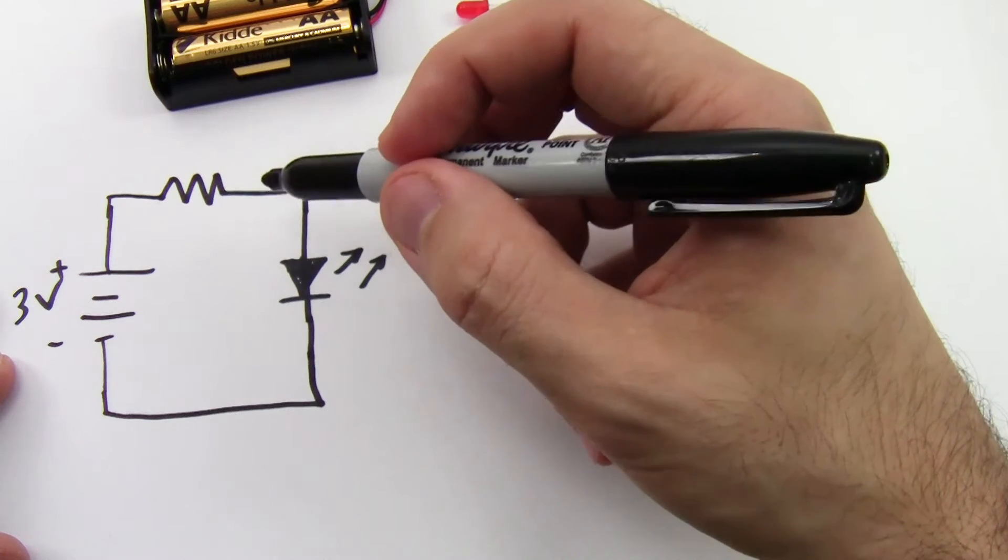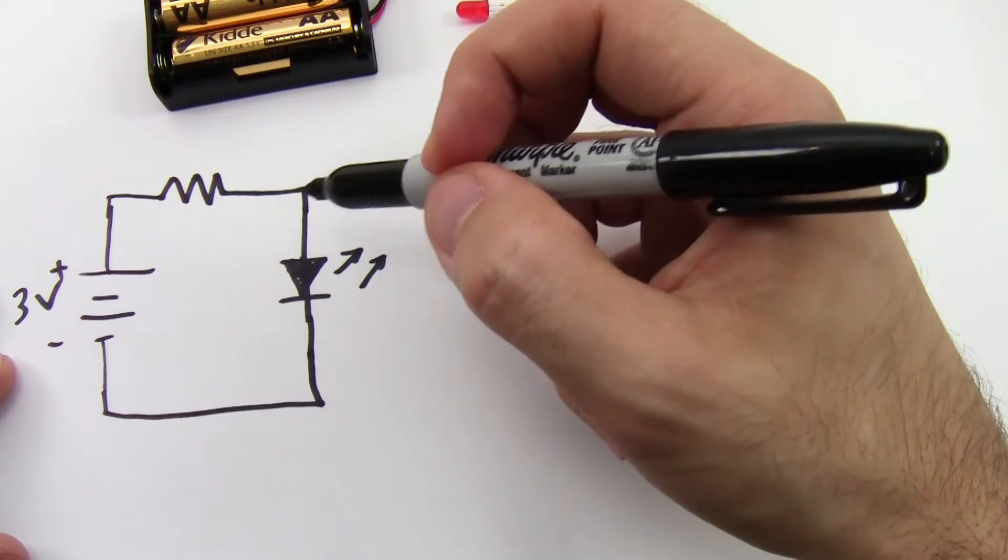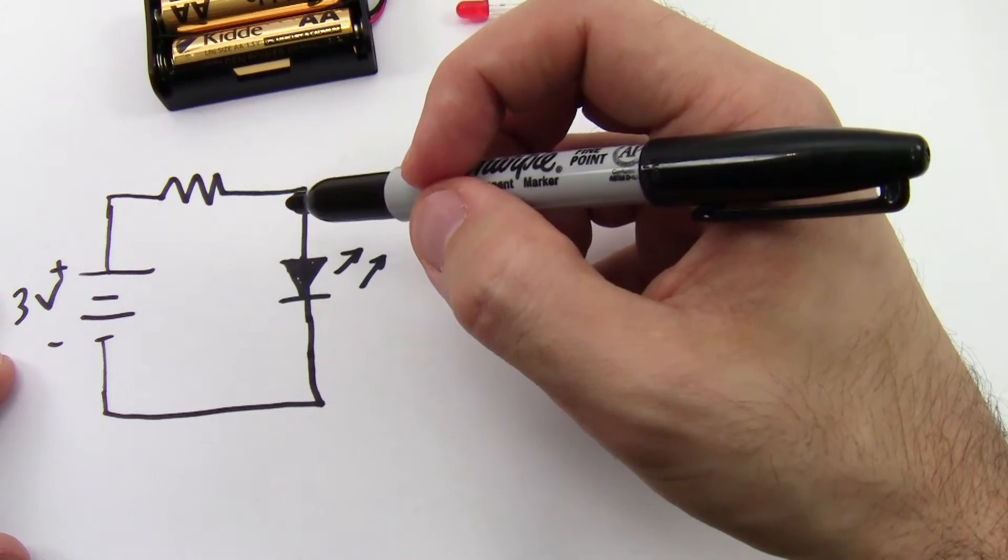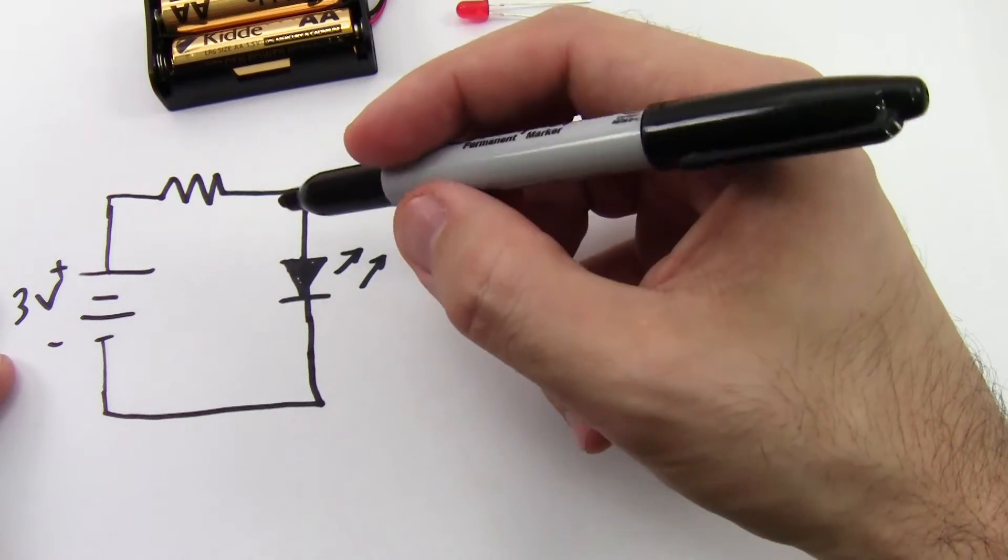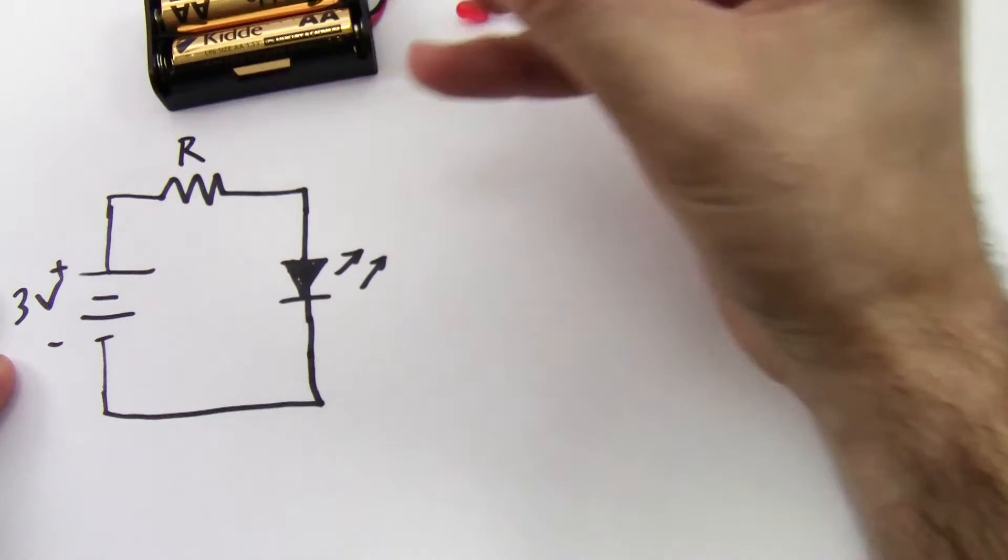I'm not going to go into that in detail here. I have another video linked in the corner that you can click on if you want to see the explanation. But for now we're just going to talk about how do we choose the resistance R of this resistor.